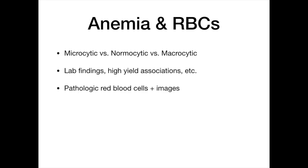The reason anemia is so high yield is that there are so many different types — microcytic, normocytic, macrocytic, and so on. They love showing you pictures on your exam and making you infer from that picture what type of anemia or blood disorder is being described. There are literally hundreds of ways they could get after this, and that's why you need to know anemia cold.